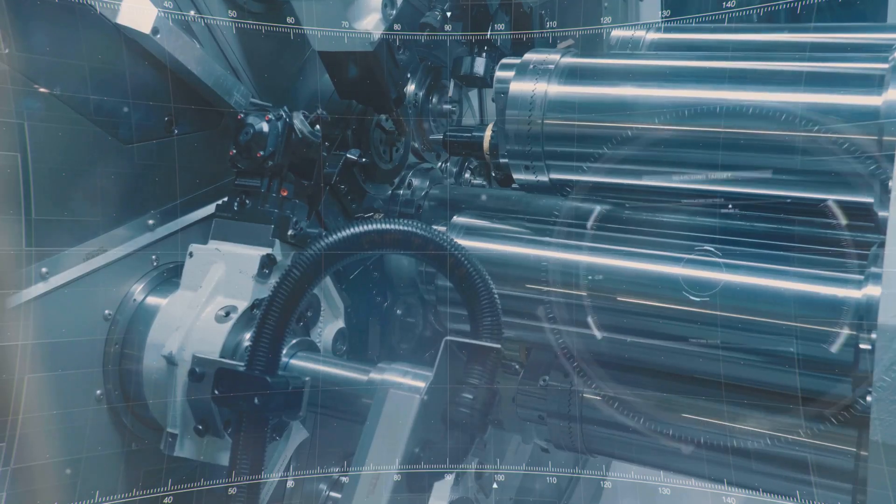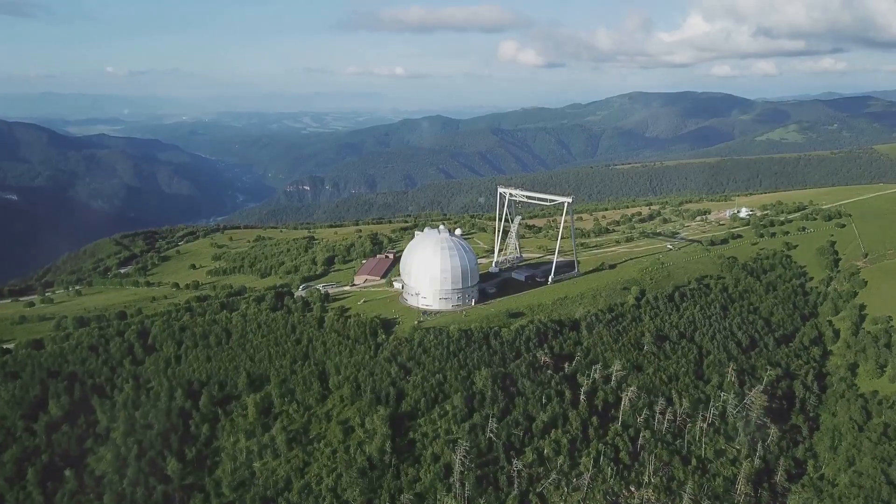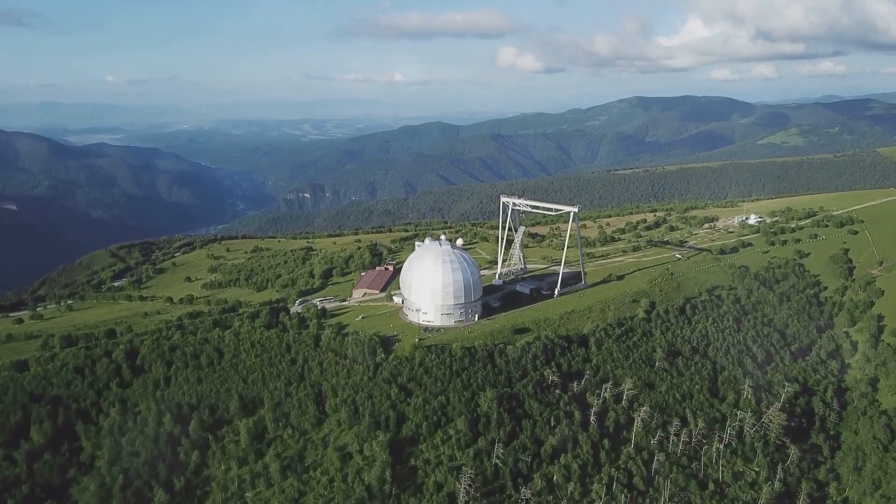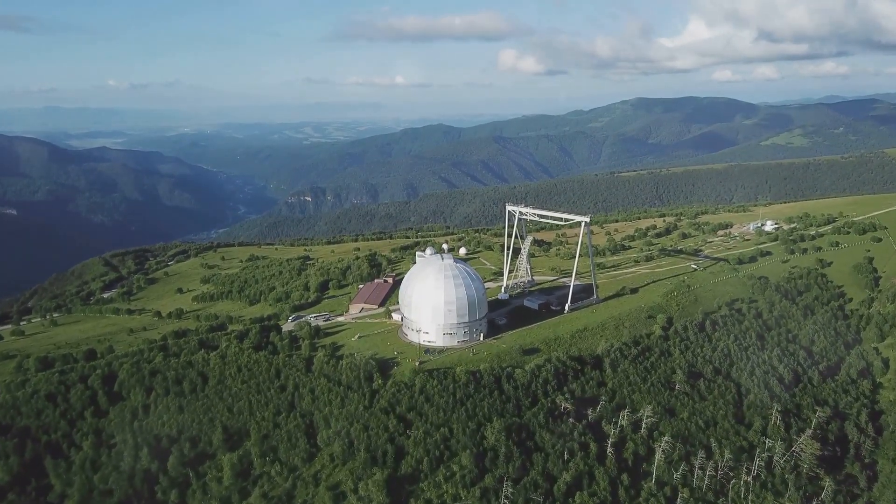LIGO consists of two observatories located thousands of miles apart, one in Hanford, Washington and the other in Livingston, Louisiana. These two locations work in tandem to provide the most accurate readings possible.